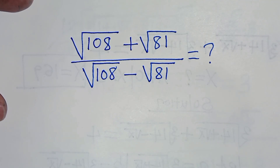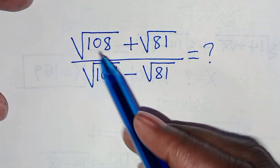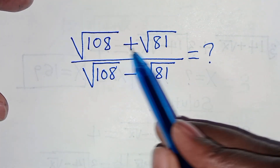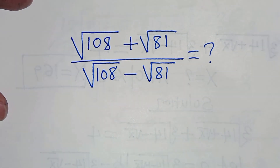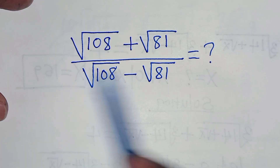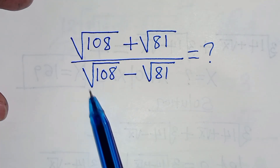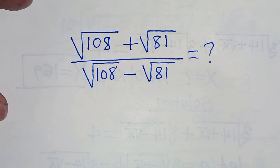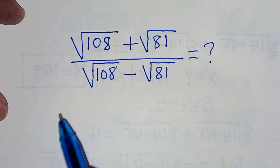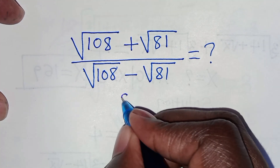Hello everyone, you are welcome to solve this nice square root math problem, which is the square root of 108 plus square root of 81, divided by square root of 108 minus square root of 81. So let's present a solution to this problem.